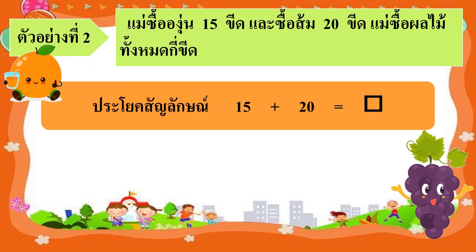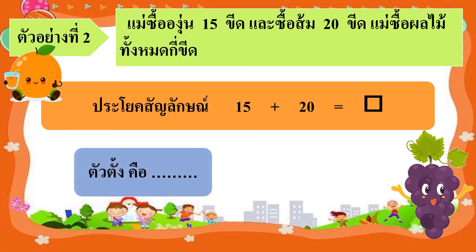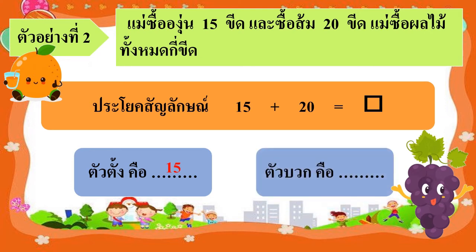จากประโยคสัญลักษณ์นะคะ จำนวนแรกคือตัวตั้ง ดังนั้นตัวตั้งในประโยคสัญลักษณ์นี้คือ 15 และจำนวนหลังคือตัวบวก ดังนั้นตัวบวกในประโยคสัญลักษณ์นี้คือ 20